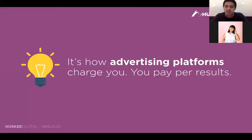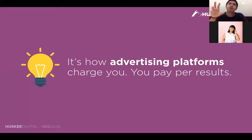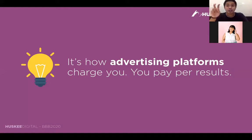Media buying models — basically, it's how advertising platforms charge you. You pay per result. Every time that you advertise on Facebook, on Google, on YouTube, you only pay them for certain results. And what those results are, I'm about to discuss.